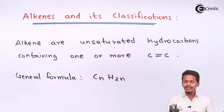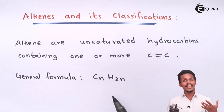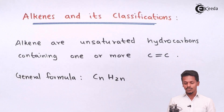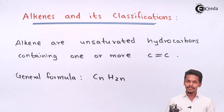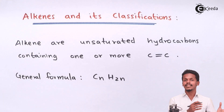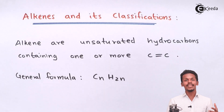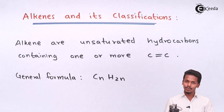Earlier we made a lecture on alkanes, and in that case we got to know that the general formula of alkanes is CnH2n+2. But now we are talking about alkenes, so in this case CnH2n is the general formula of alkenes, having 2 fewer hydrogens compared to the general formula of alkanes. Let us verify this with an example to see whether this formula holds for aliphatic hydrocarbons.